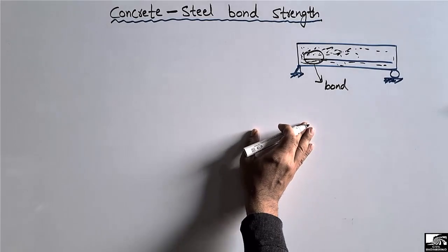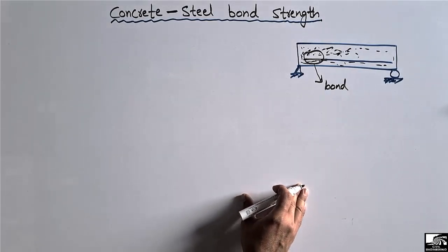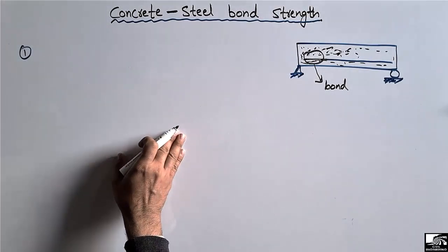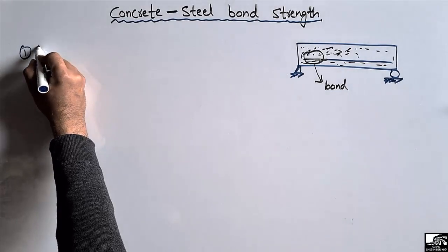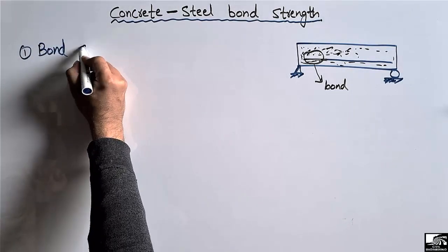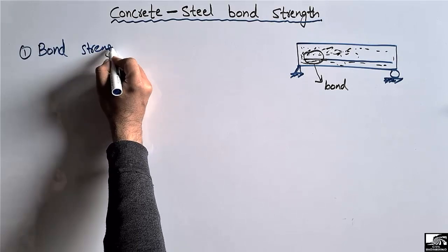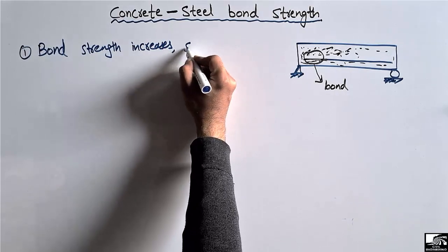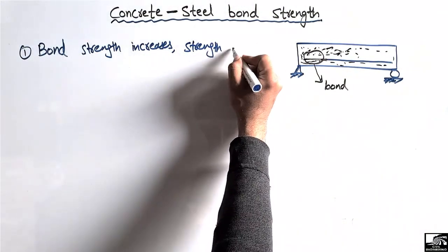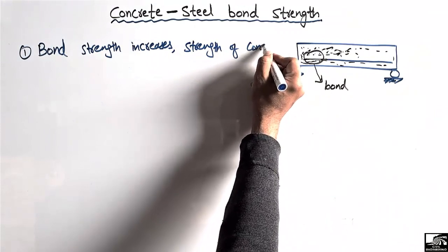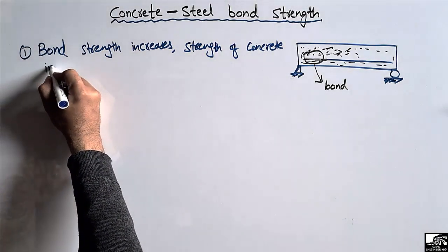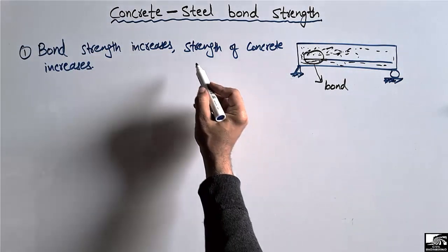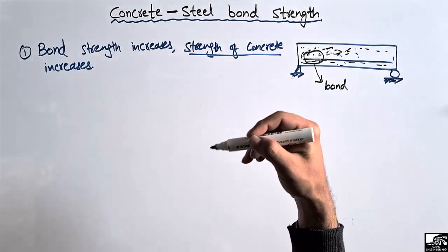The first factor is that the bond strength increases when the concrete strength increases. The bond strength depends on the strength of concrete — so the higher the concrete strength, the higher the bond strength. This is the first factor that affects bond strength.